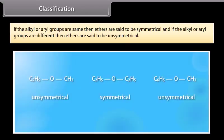If the alkyl or aryl groups are the same, then ethers are said to be symmetrical. If the alkyl or aryl groups are different, then ethers are said to be unsymmetrical.